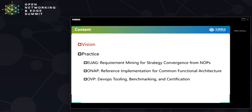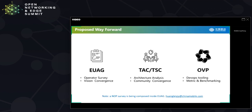With this vision in mind, China Mobile has been working on relevant aspects in Linux Foundation Networking. We believe that the following three subgroups are of particular interest in our proposed way forward: requirements mining for strategy convergence from network operators; ONAP or other technical projects to build a reference implementation for common functional architecture; and OVP to provide DevOps tooling, benchmarking, and certification procedures for network autonomy solutions.